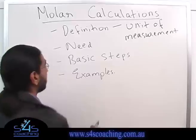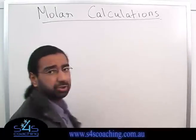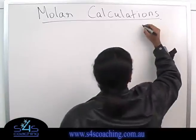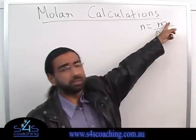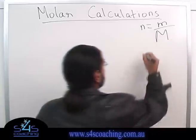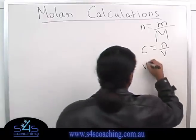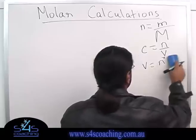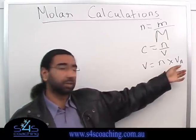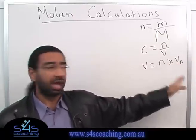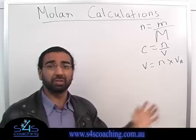For Year 12 there are only three formulas you'll ever need to do any mole calculations. The first one is n equals M over molar mass — the number of moles equals the mass of the substance divided by the molecular weight. The second is concentration equals the number of moles divided by the volume. The third is volume equals the number of moles multiplied by VA, where VA is the molar volume given in your data sheet depending on whether the temperature is STP or SLC. That's all the formulas you need.